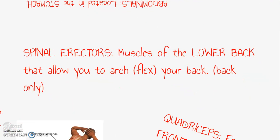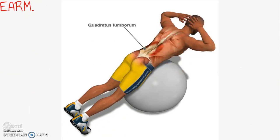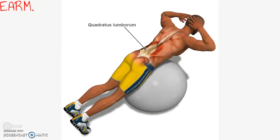The next muscle is the spinal erectors. These are the muscles of your lower back. If you wake up in the morning and find your lower back stiff and it's hard to stand up straight, those are your spinal erectors that you're feeling. They are seen from the back view only. This is a back extension using a fitness ball.